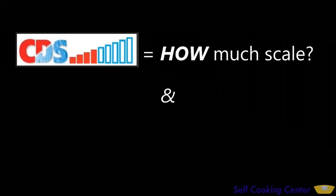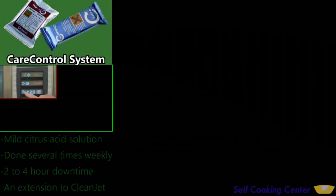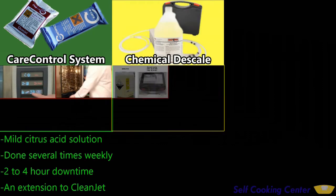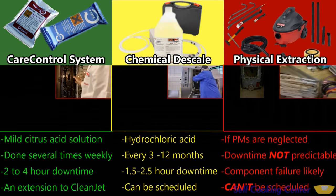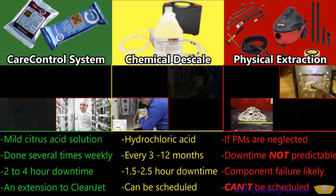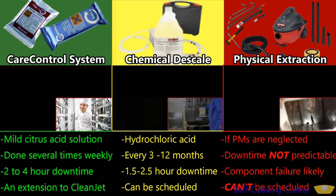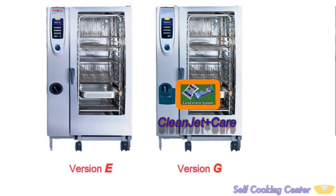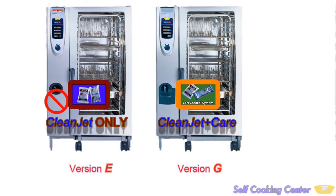Before attempting to quantify a degree of scale buildup based upon the CDS bar graph, let's do a quick overview of the methods available for descaling an oven. Beginning with the SCC line of ovens, we now have three ways to deal with scale. The care control system provides a mild descaling solution to address scale several times a week during cleaning. Otherwise, chemical descaling is done every three months up to a year during regular preventative maintenance. Then there's physical extraction, which is necessary when preventative maintenance has been neglected. The care control system is a major labor saver — it's available on the version G SCC and the white efficiency, but not on the version E. The version E merely has a clean jet program to clean the oven. The next easiest way to address scale is by doing a chemical descaling.